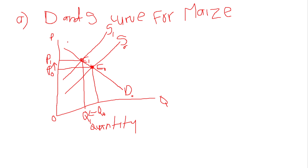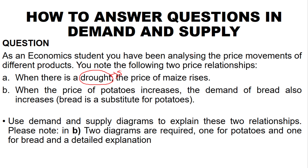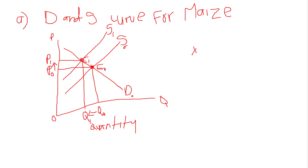Now you still have to explain. When explaining, it is best to start with the factor discussed in the scenario. Say that drought will cause a decrease in the supply of maize. The supply curve shifts from S0 to S1. The equilibrium moves from E0 to E1. The quantity supplied decreases from Q0 to Q1. And the price of maize increases from P0 to P1. Make sure you indicate with arrows. And there you are done.